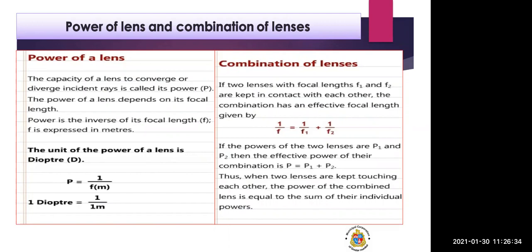Since there are different focal lengths, there will be different powers. For one lens, P = 1/F. For two lenses, P1 = 1/F1 and P2 = 1/F2. The effective focal length formula is 1/F = 1/F1 + 1/F2. Since 1/F is power P, and 1/F1 is P1, and 1/F2 is P2, we can write P = P1 + P2. So both formulas — 1/F = 1/F1 + 1/F2 and P = P1 + P2 — are equivalent.